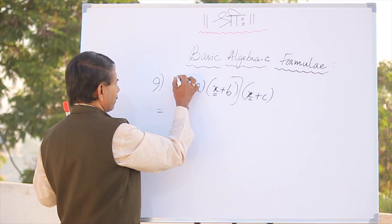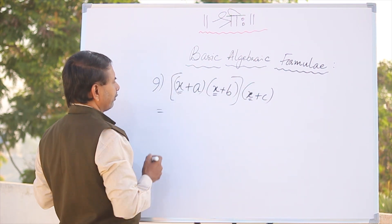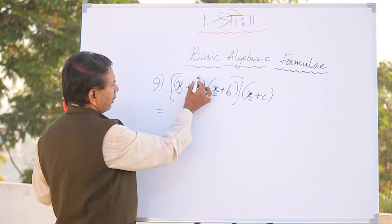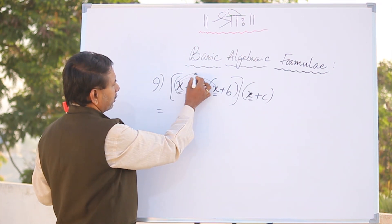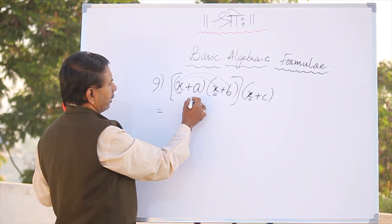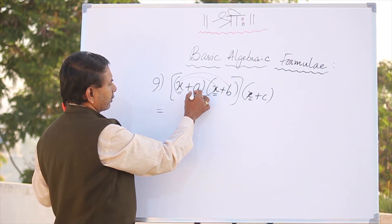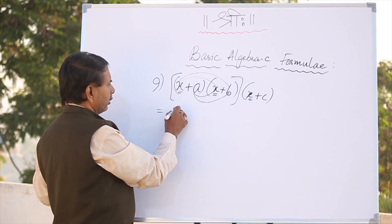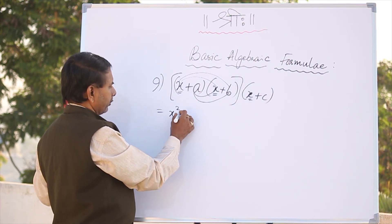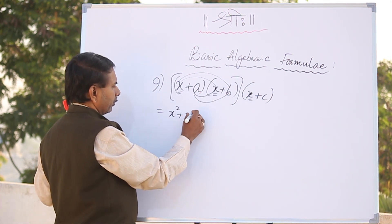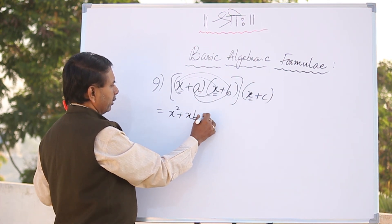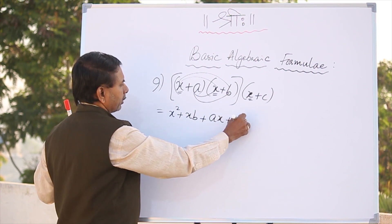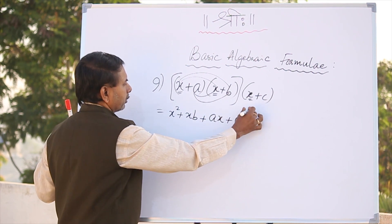We will split like this. Now tell me — you can take the factors: x into x, x into b, a into x, a into b. Come on tell me: x square plus x b plus a x plus a b.